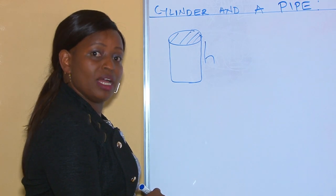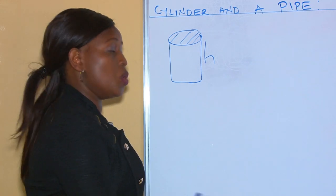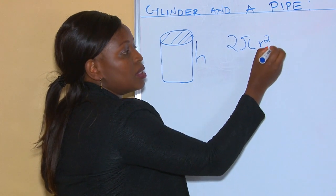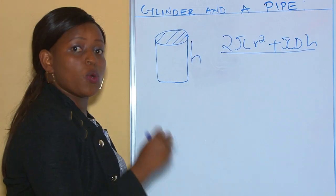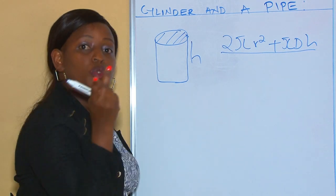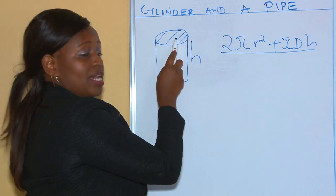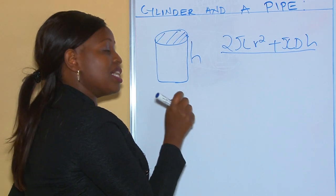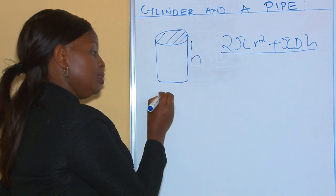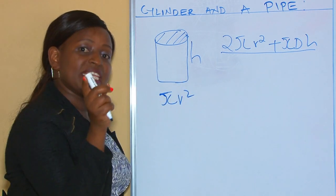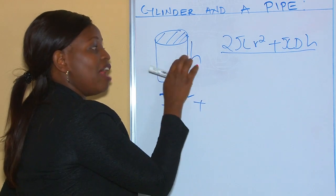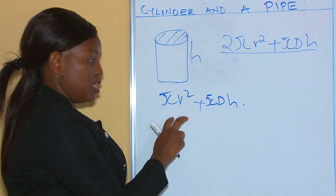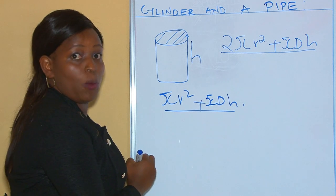From our formula for getting surface area of a closed cylinder, which was 2πr² + πdh, we had 2πr² because there were two circles. Now since it's open, we have only one circle. Therefore, our formula for getting surface area of an open cylinder becomes πr² — the area of only one circle — plus the curved surface, which is πdh.